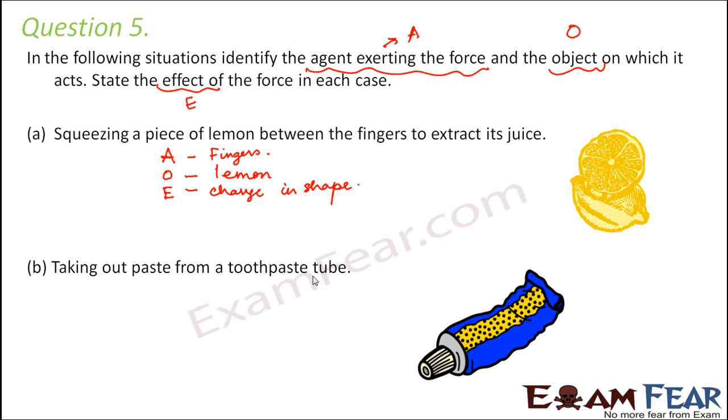Next one, taking out paste from a toothpaste tube. So in this case, again, we have to find out these three. So which is the agent which is exerting force? Again, in this case, also it is fingers because how do you take out paste from a toothpaste tube? By pressing it with your fingers. So fingers are exerting force. What is the object here? Object is the toothpaste tube because the force is being exerted on this tube. And what is the effect? Again, change in shape because the shape of the toothpaste tube changes.